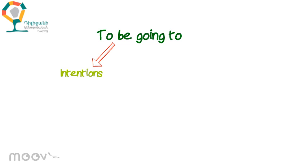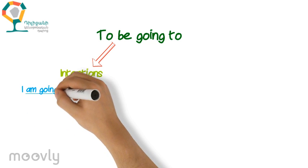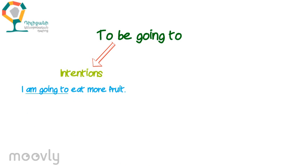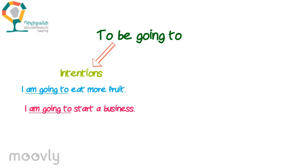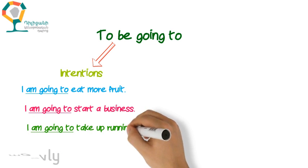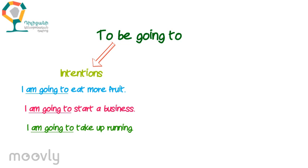The first case is intentions — when you make an intention to do something in the future. For example, I make an intention to eat more fruit in future, so my sentence will be: 'I am going to eat more fruit.' Or if I have an intention to start a business, I will say: 'I'm going to start a business.' Another example: 'I am going to take up running,' meaning I intend to start running in the future.